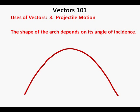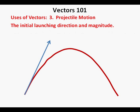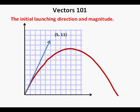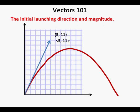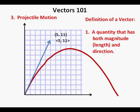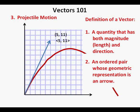In launching an object to flight, we can take a close look at an initial angle of incidence. This blue ray designates the initial firing or launching magnitude and angle of the object, with coordinates ⟨5, 11⟩. To analyze this direction and magnitude, we measure the drawing of the ray against the coordinate grid. A vector has two attributes — magnitude and direction. In fact, that's a definition of a vector: a quantity that has both magnitude and direction. Magnitude is another word for length, and on a coordinate plane, a vector is an ordered pair whose geometric representation is an arrow.